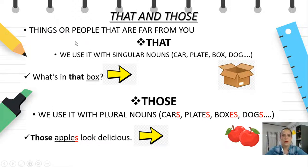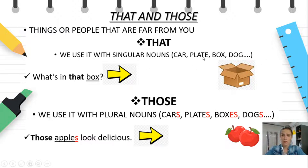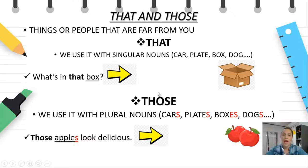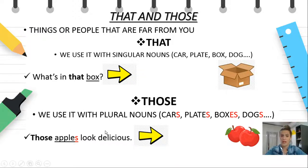What about 'that' and 'those'? We use 'that' and 'those' for things or people that are far from you. We use 'that' only with singular nouns — one thing or one person — such as car, plate, box, dog. For example: What's in that box over there? The box is far from you. And we have 'those' for plural nouns, such as cars, plates, boxes, dogs. Those apples over there, which are far from me, look delicious — two apples far from the arrow.